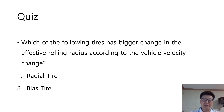As usual, I prepare a quiz for you. Which of the following tires has a bigger change in the effective rolling radius according to the vehicle velocity change? Number one, radial tire. Number two, bias tire.